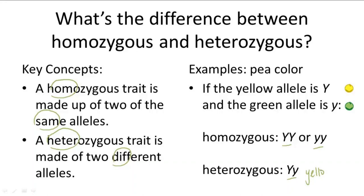A homozygous organism is an organism which consists of two similar alleles for a particular character. A heterozygous or hybrid organism is an organism which consists of both alleles for a pair of contrasting characters — it is called a heterozygous or hybrid organism.